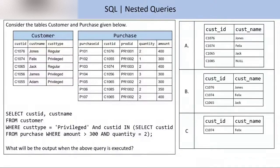Let's understand some questions so we can understand what nested query is all about. You are given two tables: customer and purchase. Customer has three columns: customer ID, customer name, and customer type. Purchase has five columns: purchase ID, customer ID, product ID, quantity, and amount. You are given a nested query and asked what the output will be when it is executed, with three options A, B, and C.